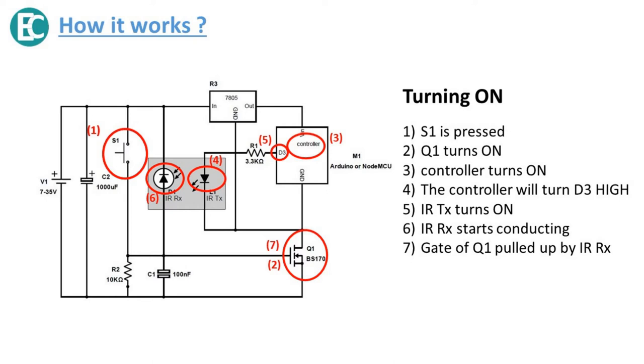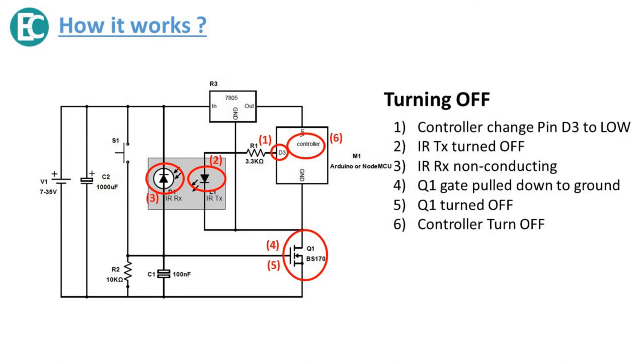Now next, how to turn off the circuit? When the controller identifies any condition so that the controller should be turned off, then the controller will toggle D3 to low. Hence the IR transmitter will be off, hence the IR receiver resistance will be high, hence the gate of Q1 will be pulled low and the MOSFET will be off. Hence the controller will turn off.